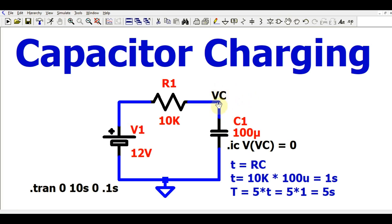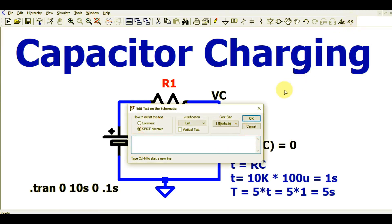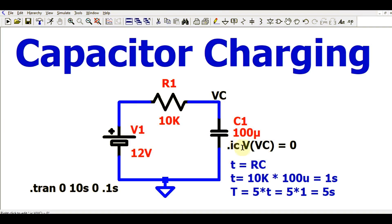This node is labeled VC, and the voltage across the capacitor is given by VC. For time t equals 0, the voltage across the capacitor is 0. To write this, go to the SPICE directive dot op and write: dot IC V(VC) equals 0. That is how you initialize the capacitor voltage to 0 at time t equals 0.